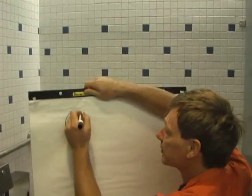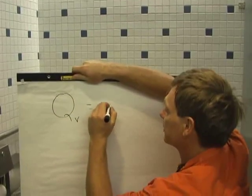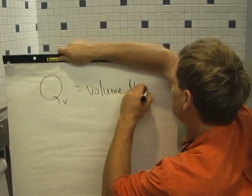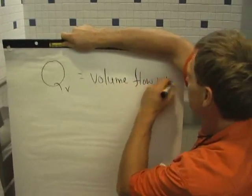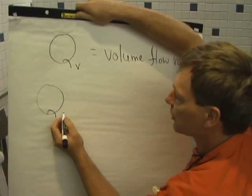Volume flow rate is given by Q sub V. That's the rate at which volume moves. Volume flow rate. And the formula for volume flow rate, the first one I'm going to show you,